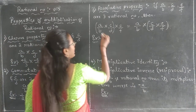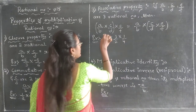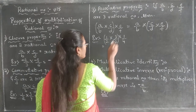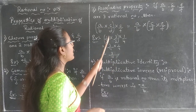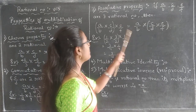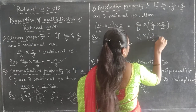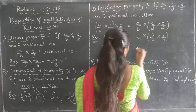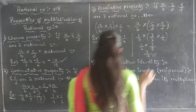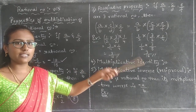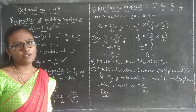Let me verify by taking one example. I will take A/B as 1/2, C/D as 3/2, and E/F as 1/4. First, solve the bracket: 1×3 = 3, 2×2 = 4, giving 3/4, then 3/4 into 1/4 gives 3/(4×4) = 3/16. Now the other side: bracket 3/2 into 1/4 gives 3×1 = 3, 2×4 = 8, so 3/8; then 1/2 into 3/8 gives 1×3 = 3, 2×8 = 16. Both LHS and RHS give 3/16. So multiplication of rational numbers satisfies associative property.